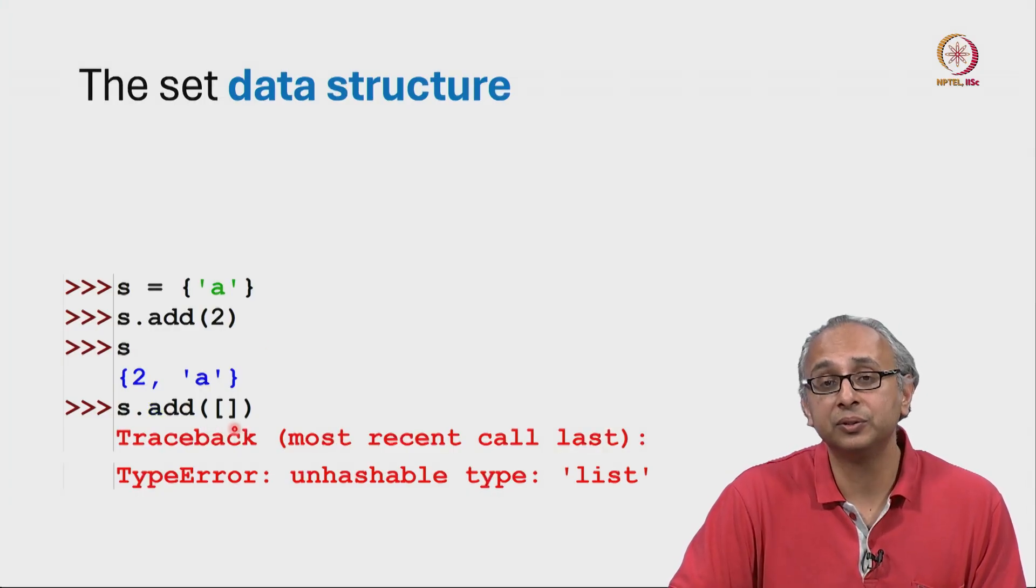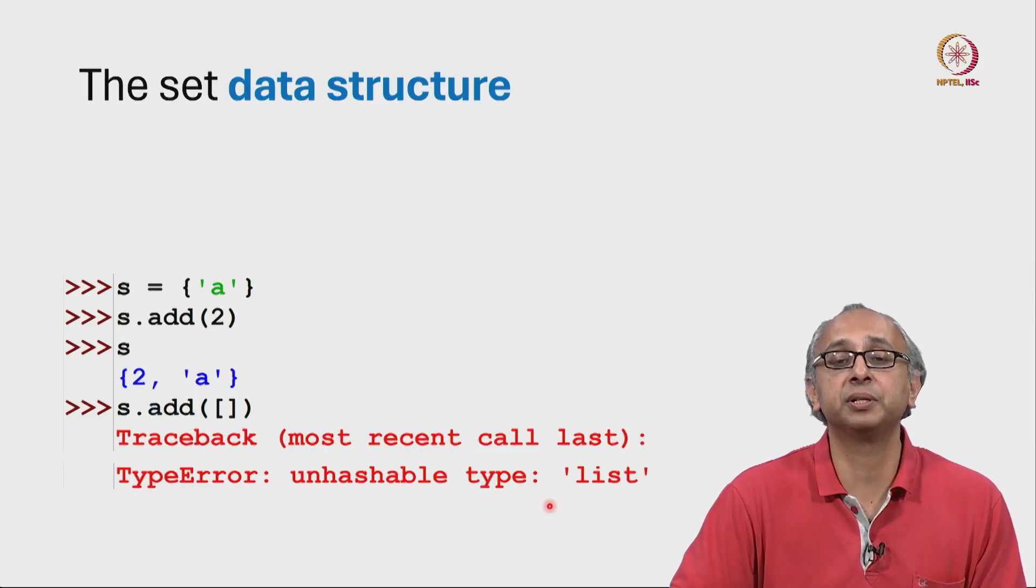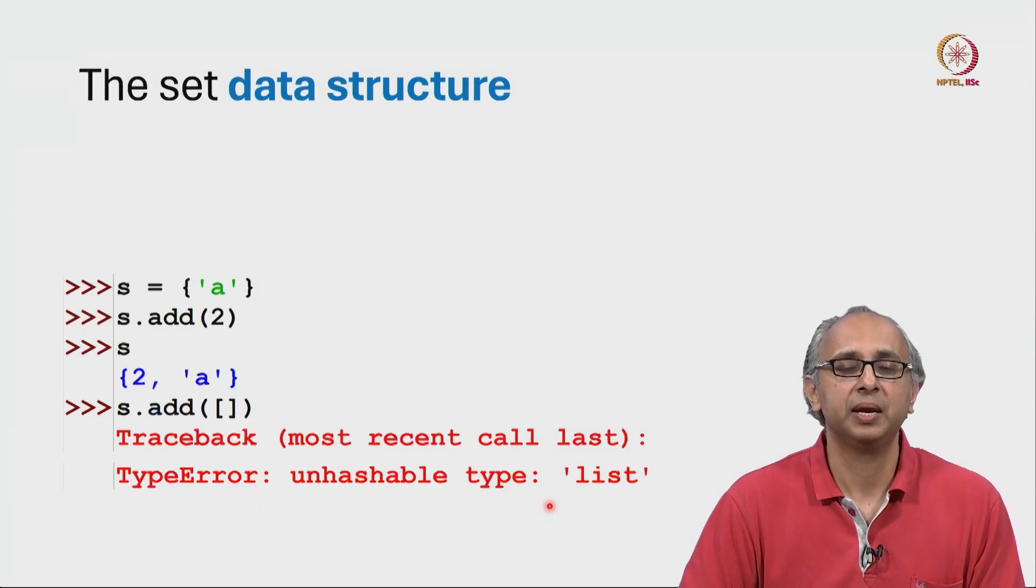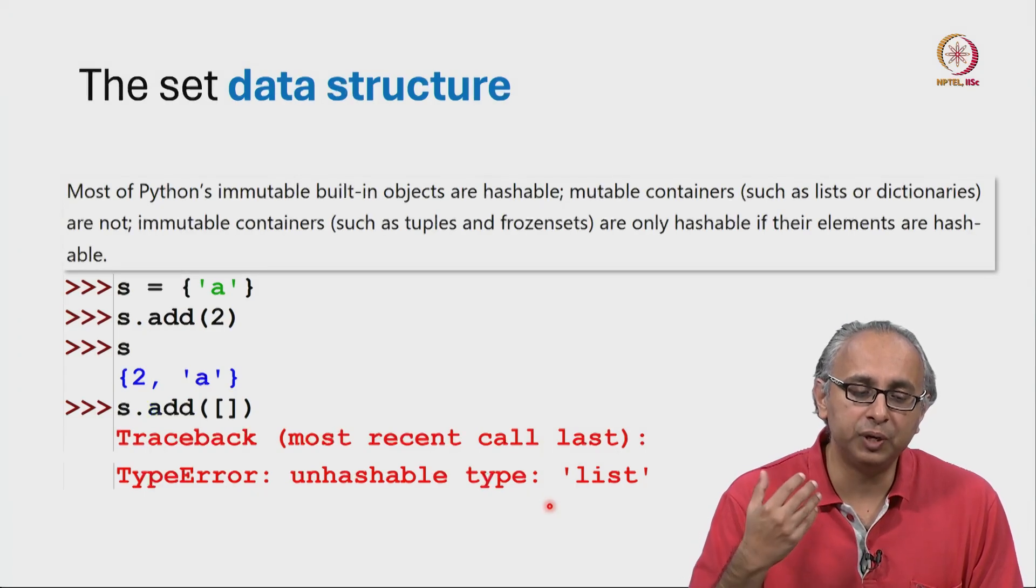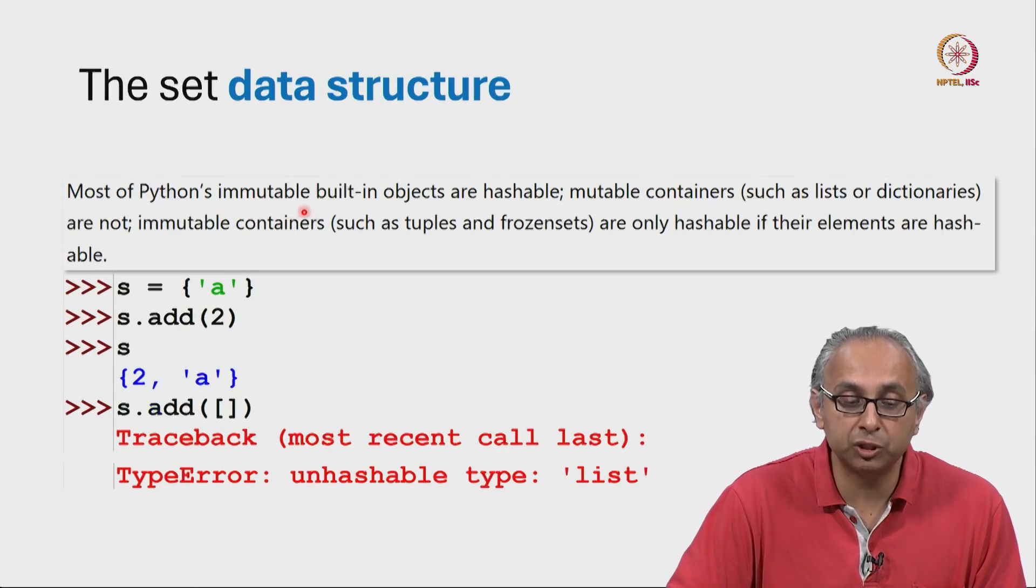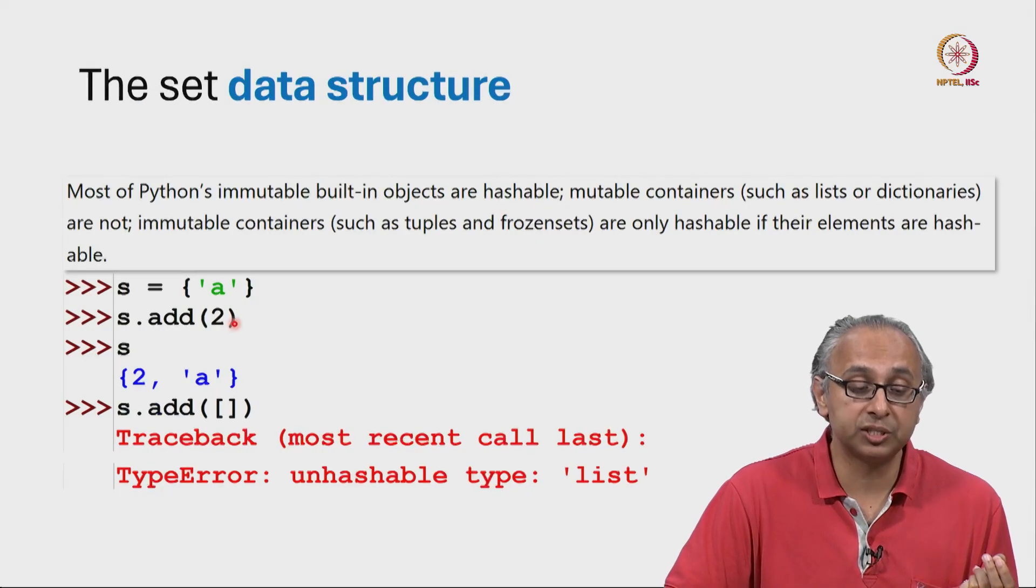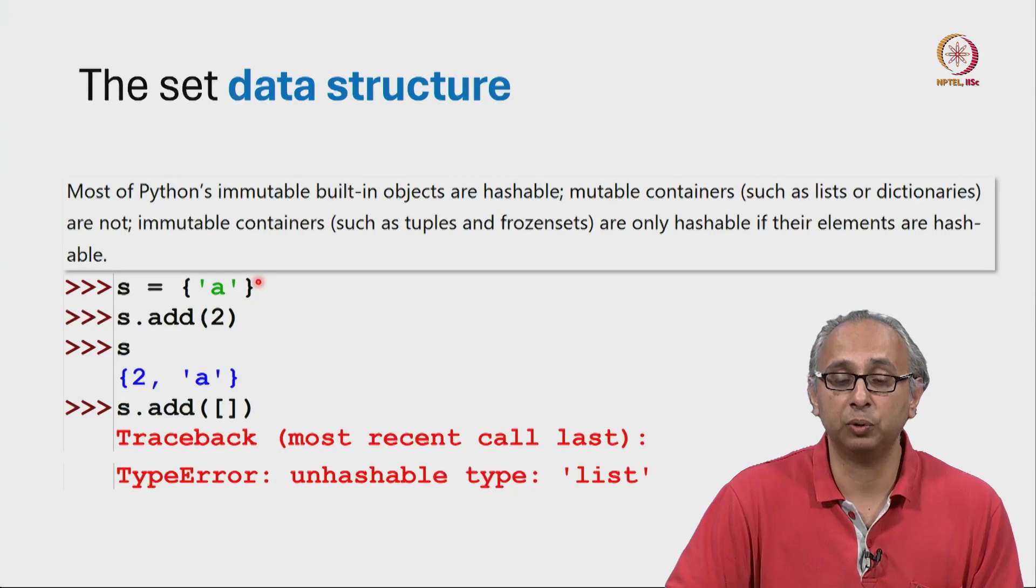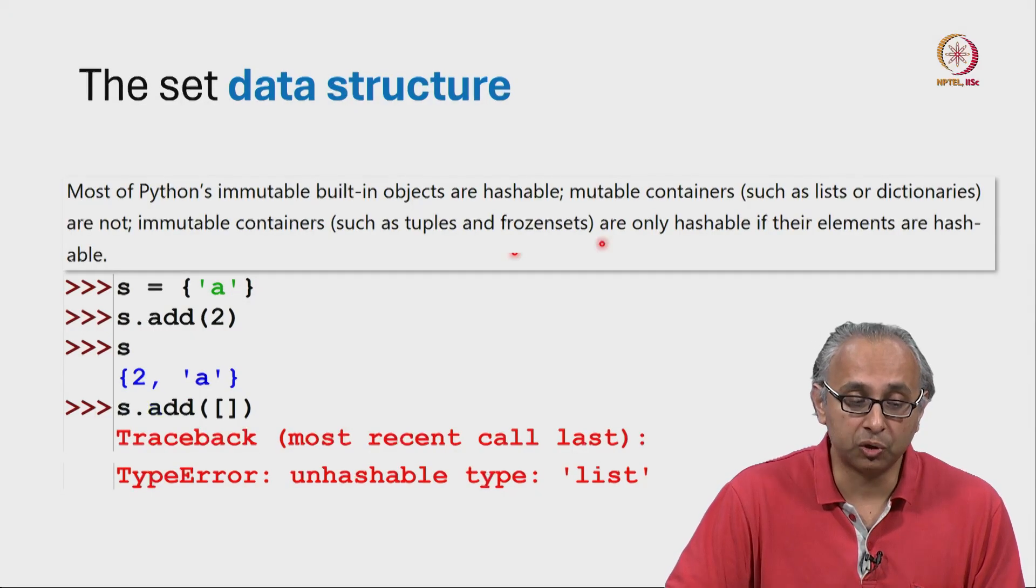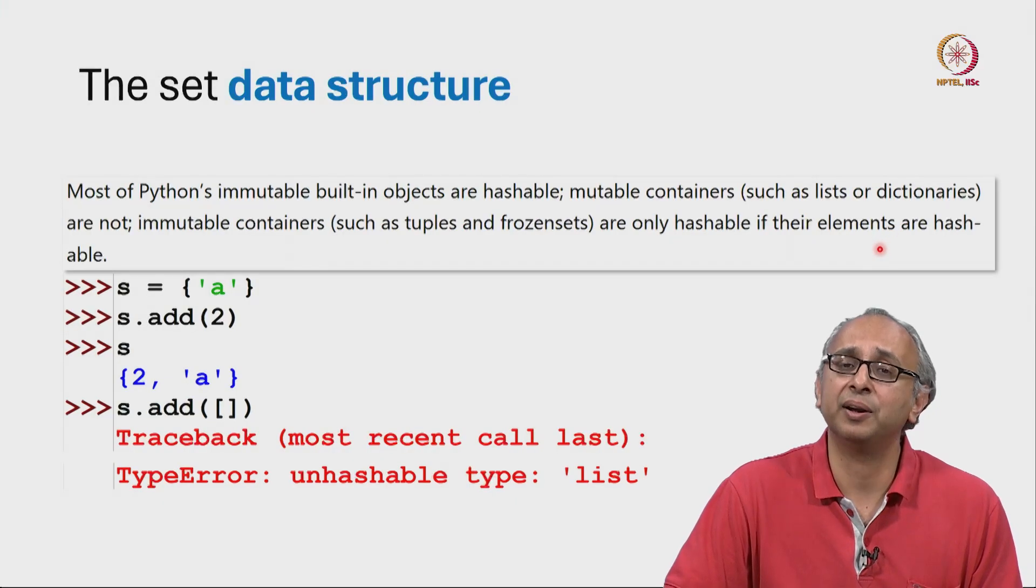It says I cannot add this unhashable type list. Now again this is a technical term and we would have to read the documentation. It tells us that Python's immutable built-in types are hashable. So immutable types like integers and strings can be added to a set. So containers such as lists or dictionaries are not and immutable containers like tuples and frozen sets are only hashable if all the items in those elements are hashable.